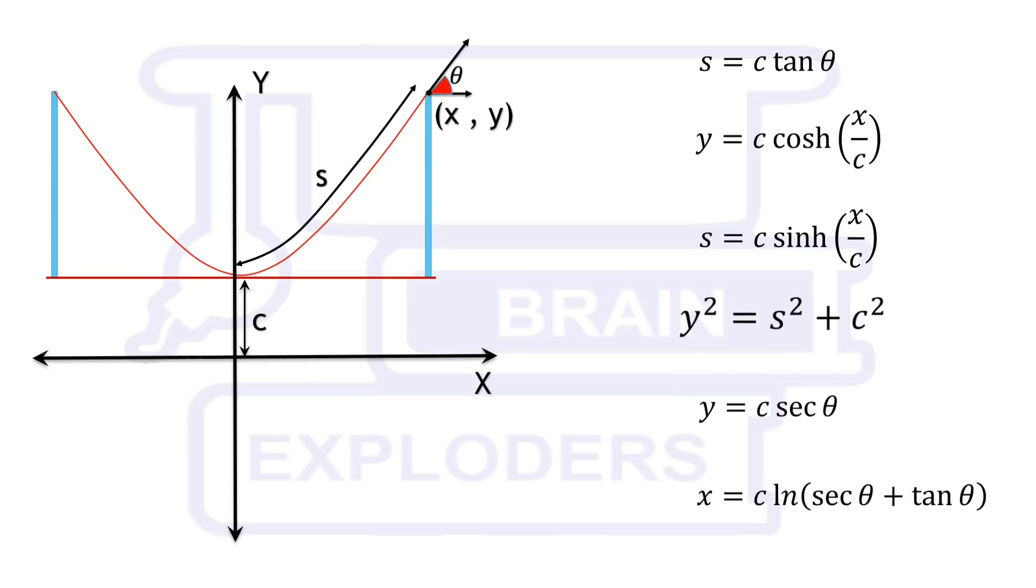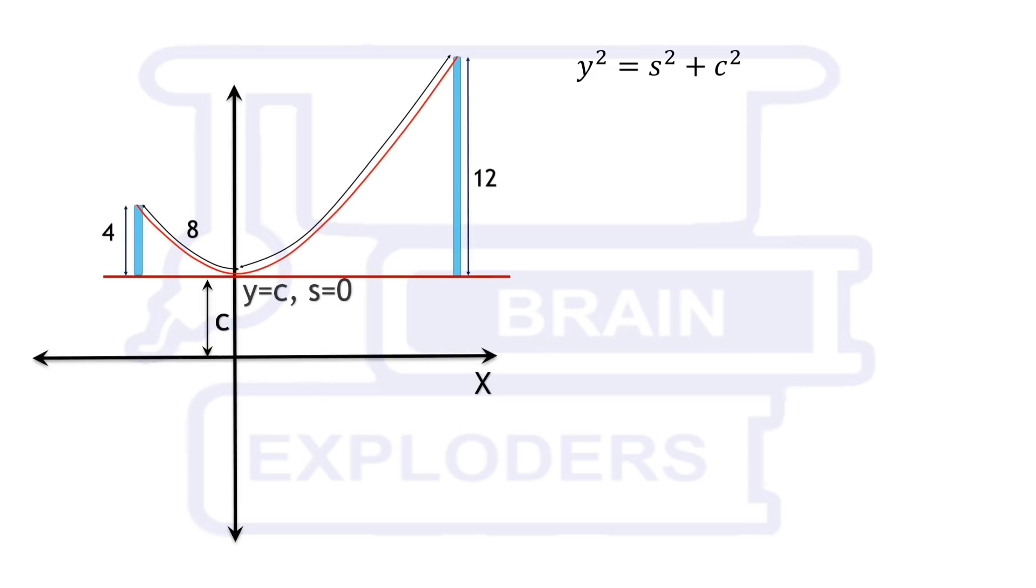At y equals to c, s is equal to 0 and at y equals to 4 plus c is equal to 8. Again we get total length of rope equals to 8 plus 12 root 2 meters. And that was our solution.